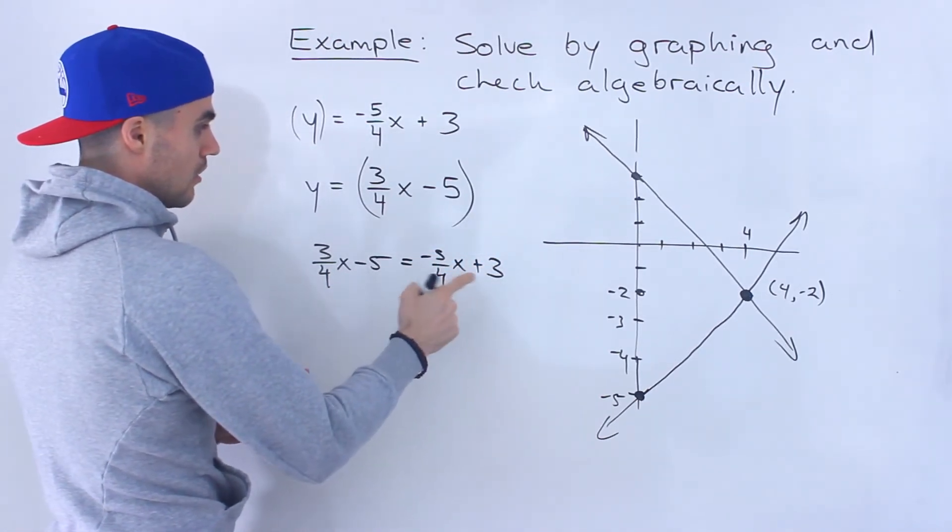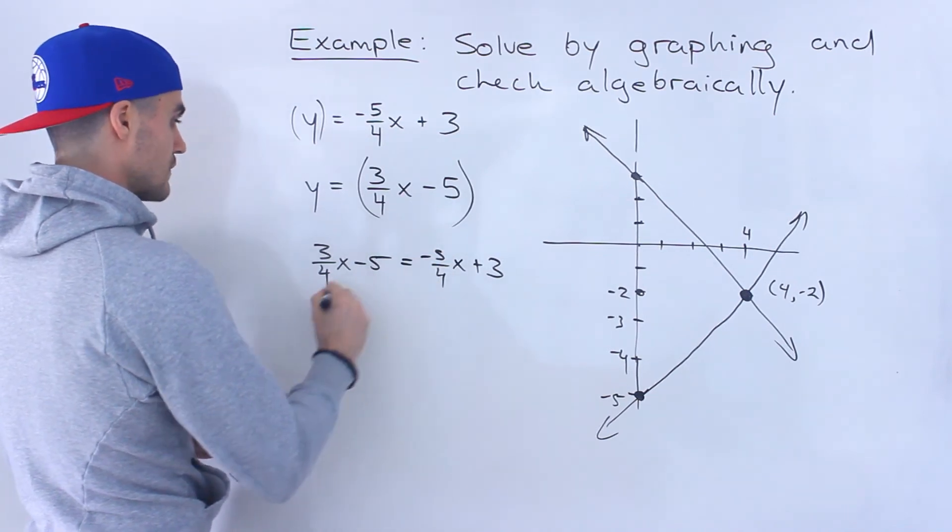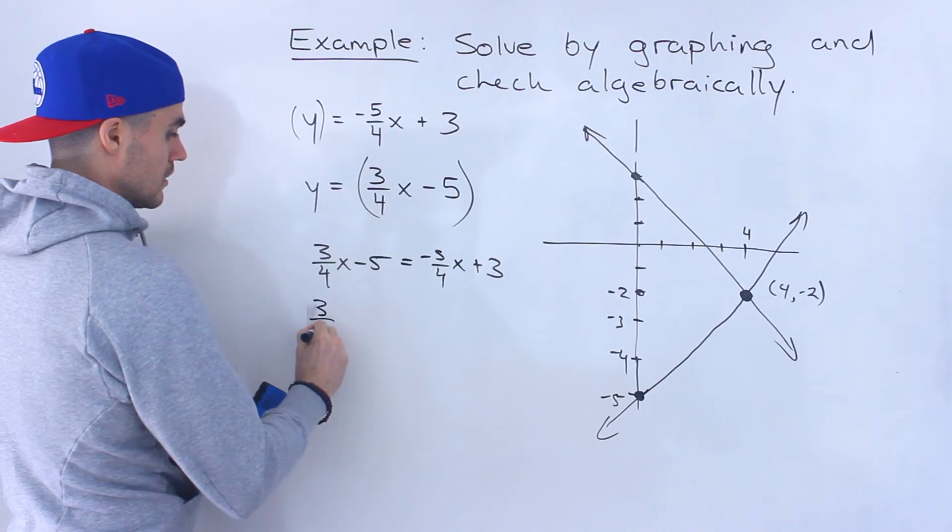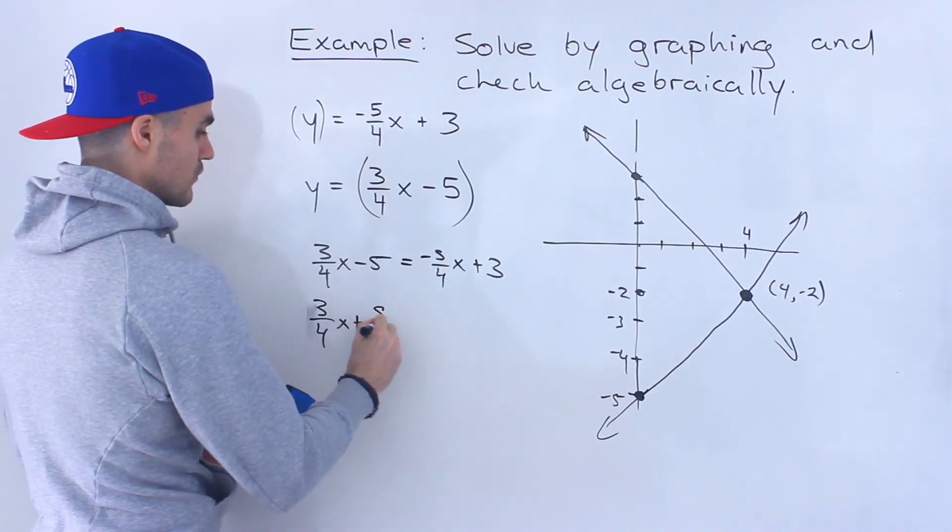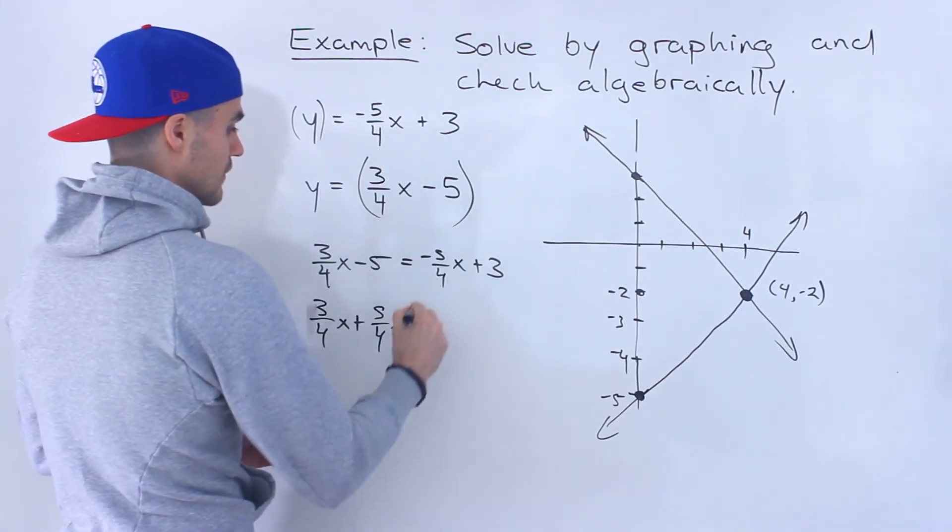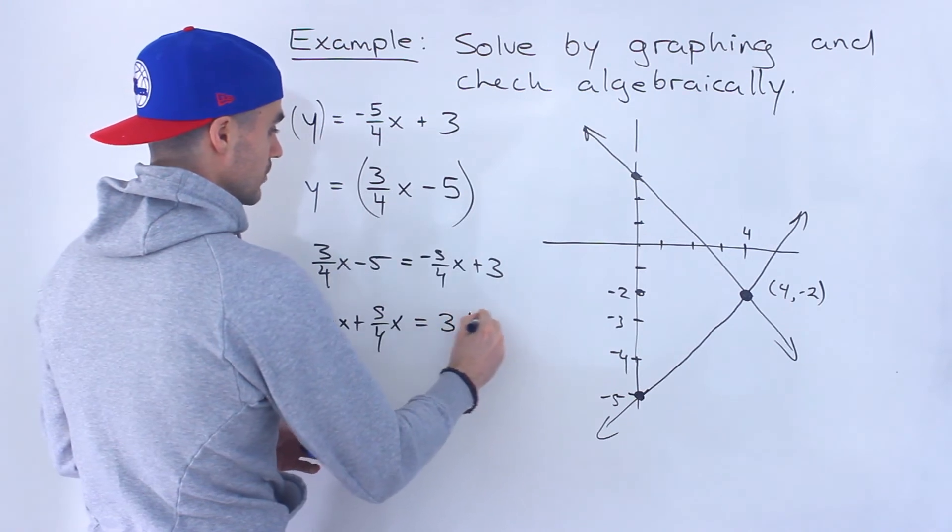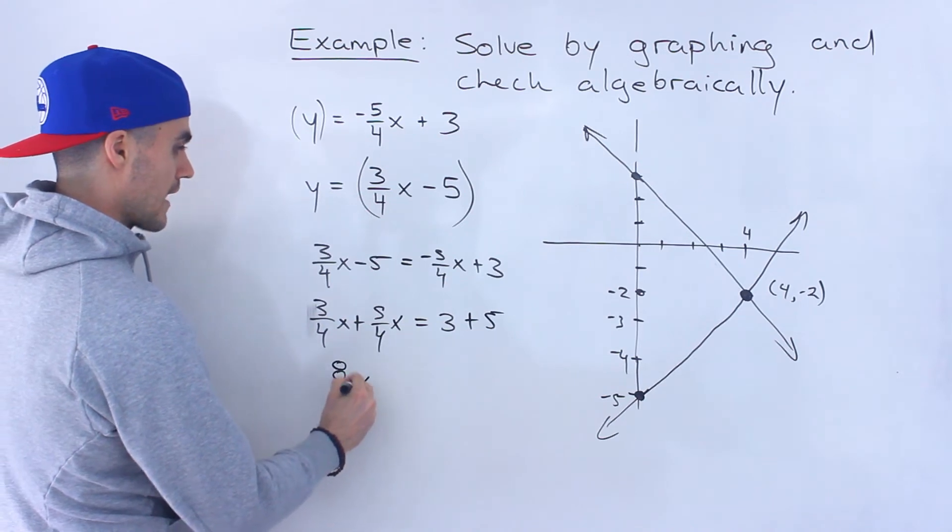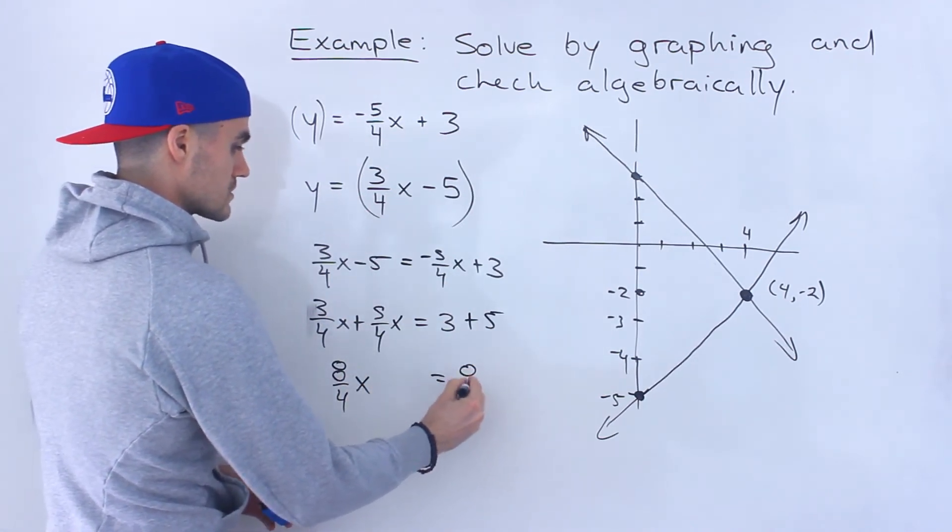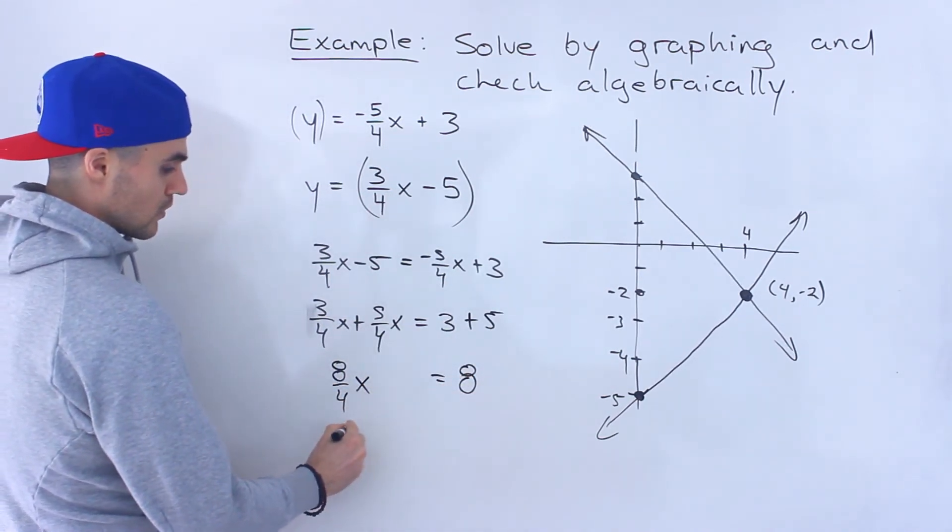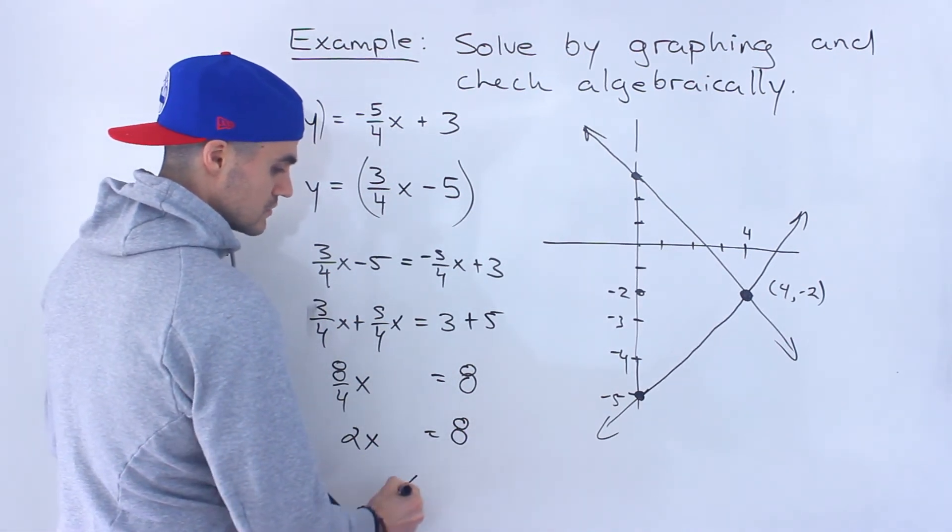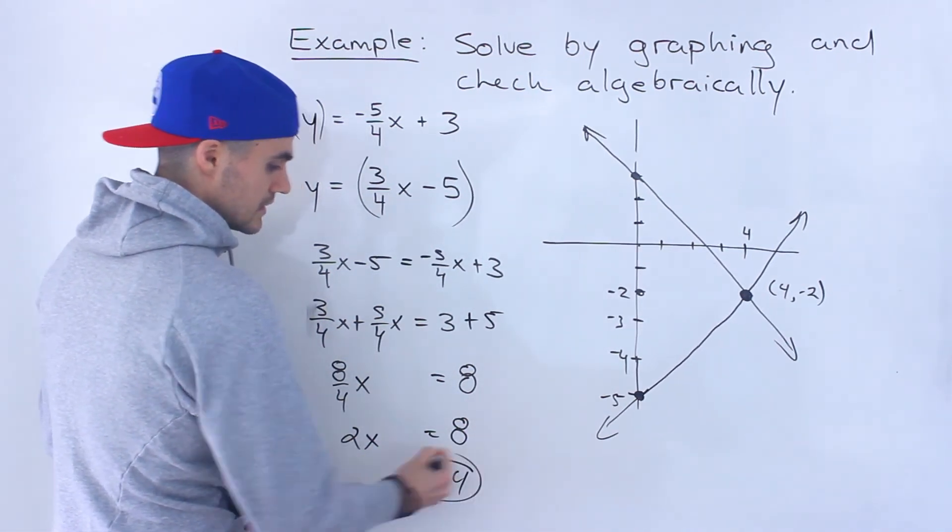So I'm going to bring all the x values to one side. So this negative 5 over 4, I'm going to bring over, so it'd be positive 5 over 4x. And this negative 5, I'm going to bring over to the other side. So we'll have 3 plus 5. So this would end up being 8 over 4x equals 8. Notice the 8 over 4, that's 2. Divide both sides by 2. x is 4.